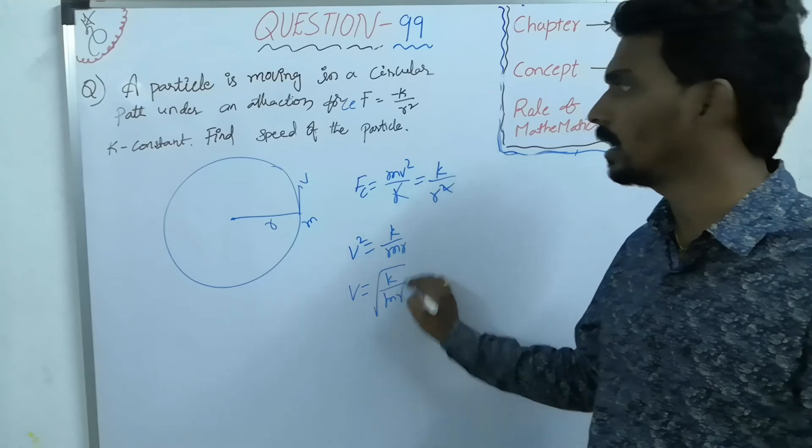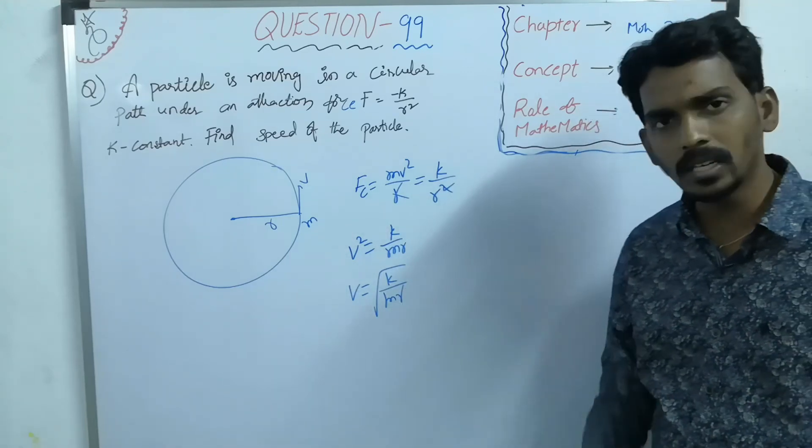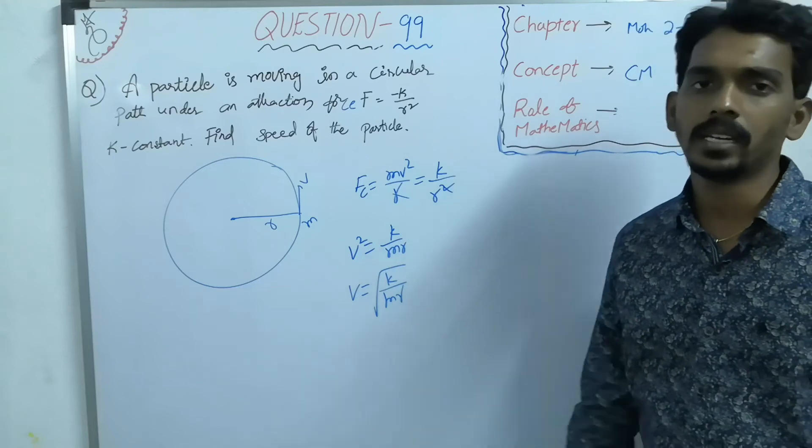v equals under root k by mr. What is the speed of the particle in circular motion? Under root k by mr.